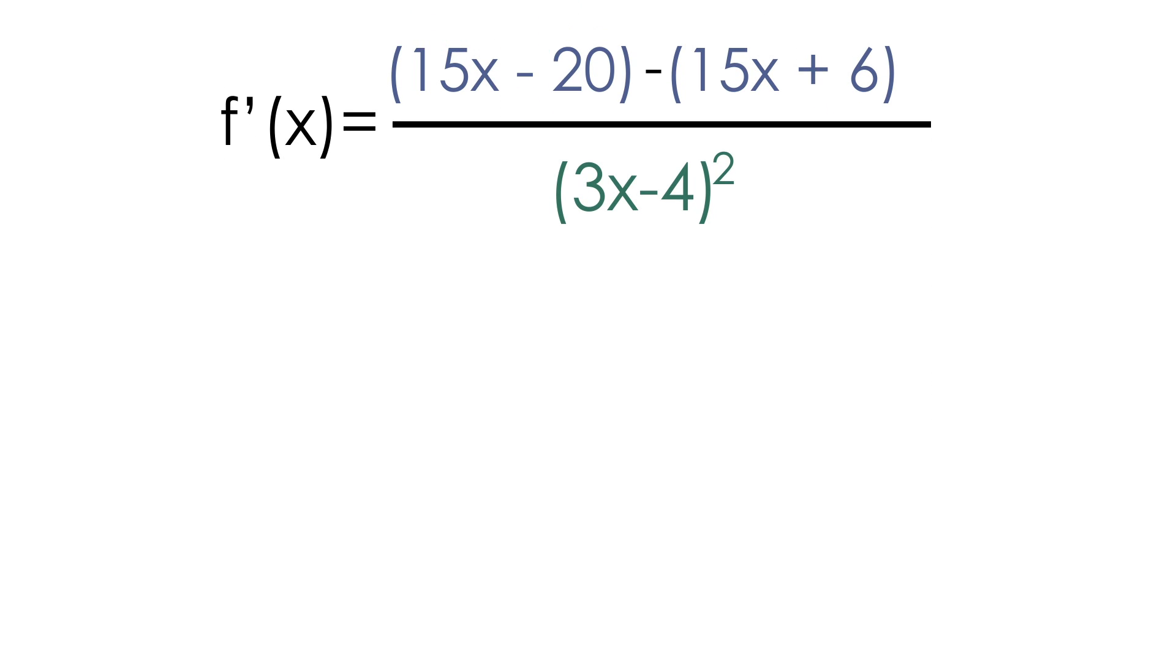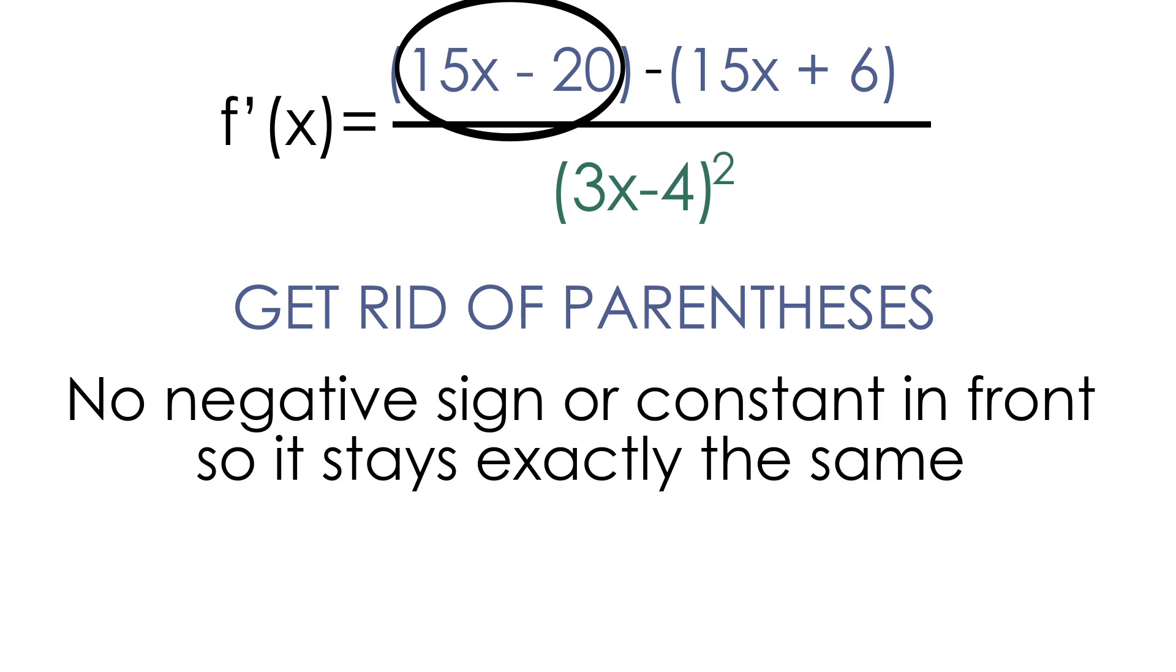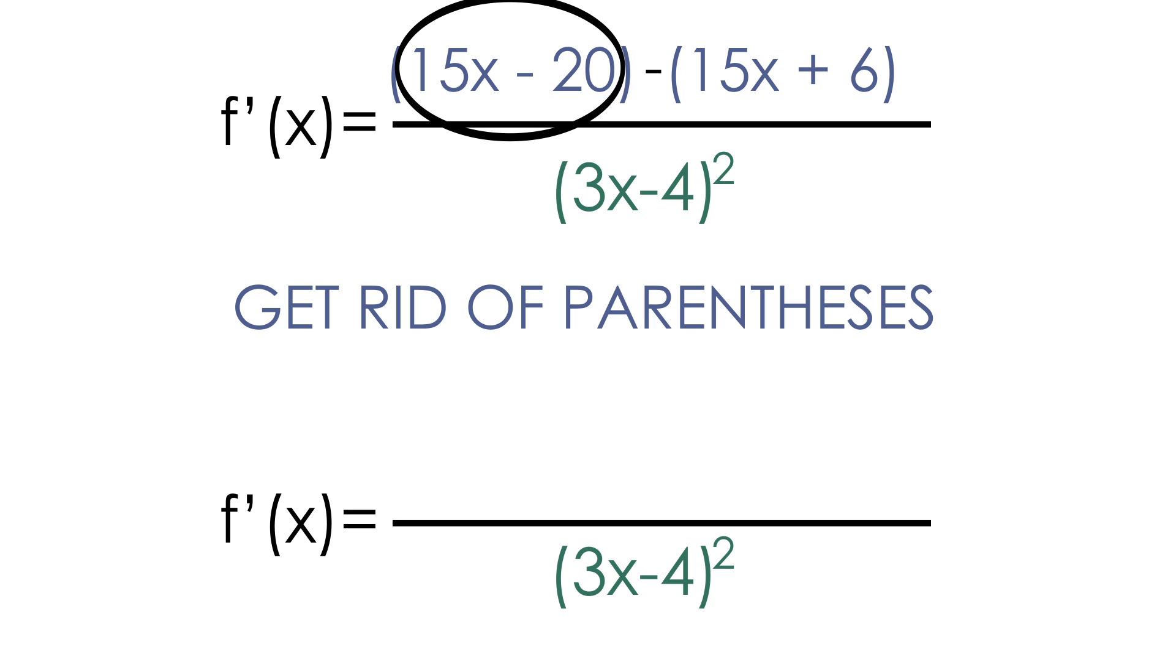So now what I like to do is get rid of the parentheses. The first set of parentheses, 15x minus 20, does not have a negative sign in front of it. It doesn't have a constant in front of it. So after we get rid of the parentheses, it'll stay exactly the same. We'll have a positive 15x, and we'll have a negative 20.